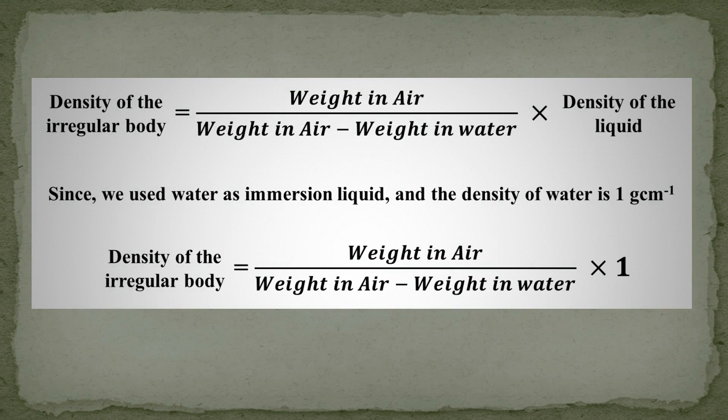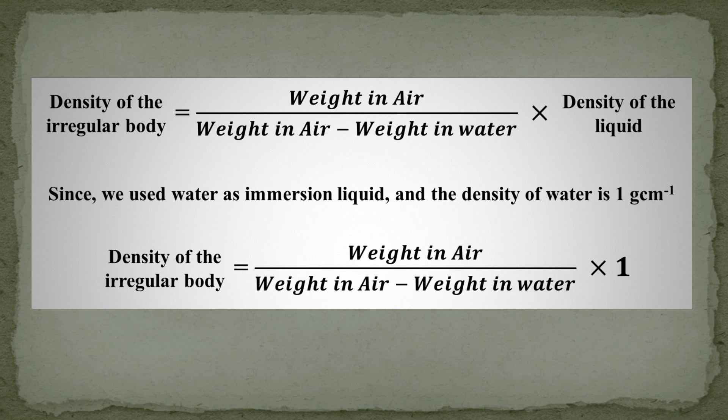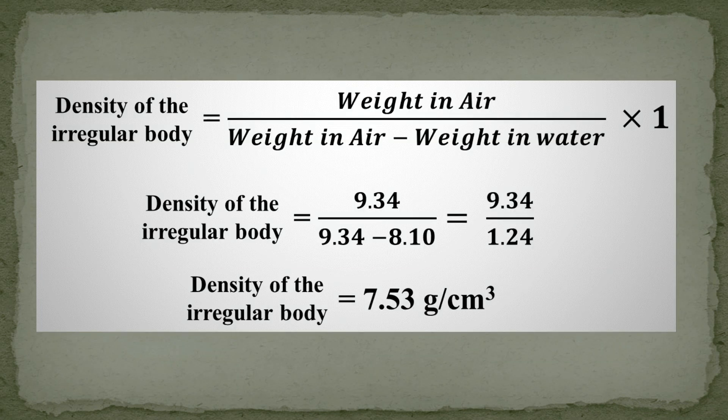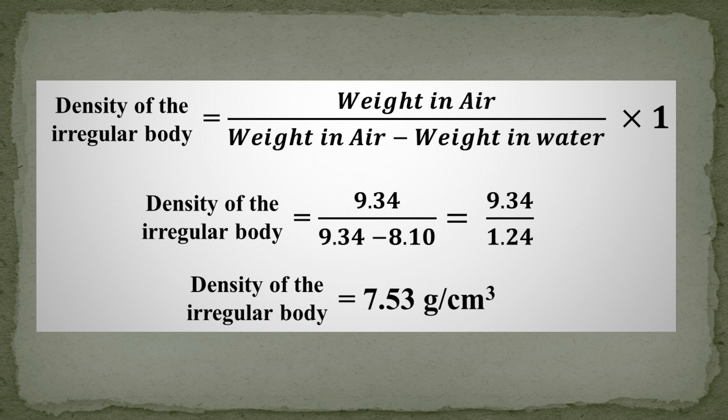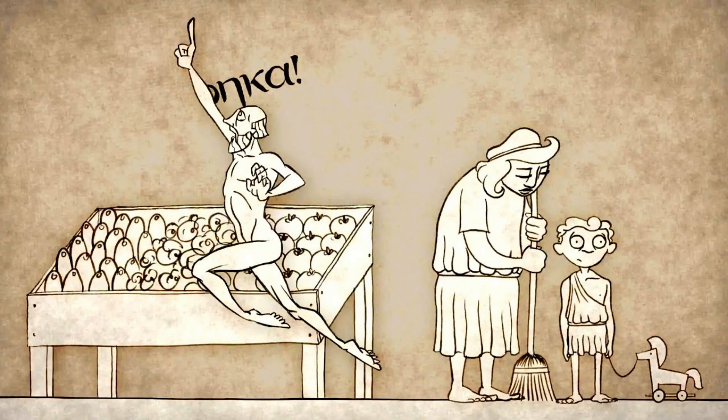Here, the formula used for measuring the density of a material is the weight of the object in air, divided by the difference of their weight in air and in water. By putting the values in this formula, we get the density of this material. This is Archimedes method for measuring the density of a material.